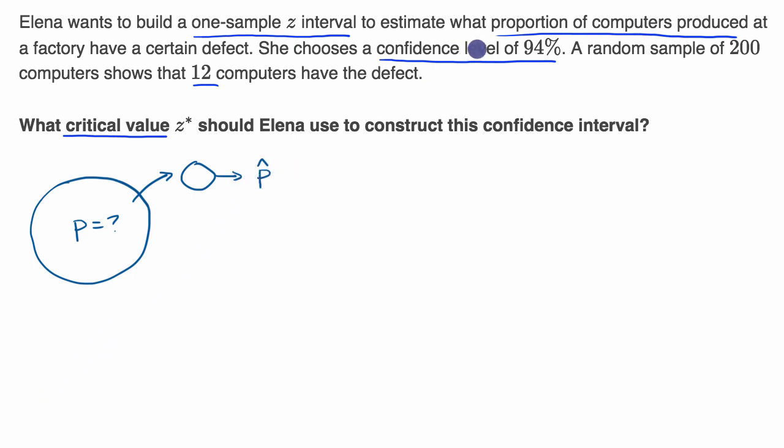But we also want to construct a confidence interval. A confidence interval at a 94% confidence level means that if we were to keep doing this and keep creating intervals around these statistics, roughly 94% of these intervals are going to overlap with our true population parameter.